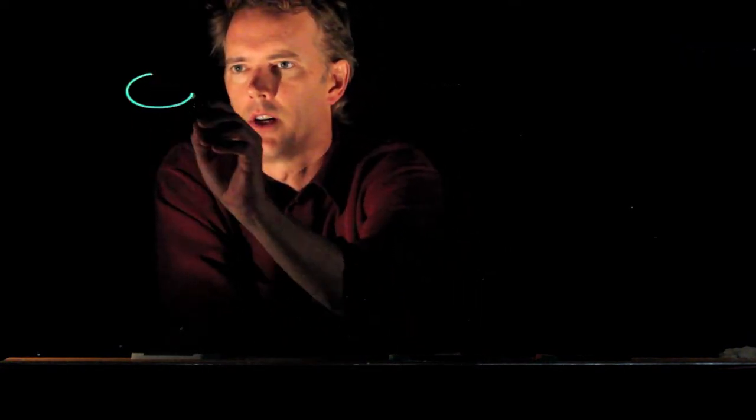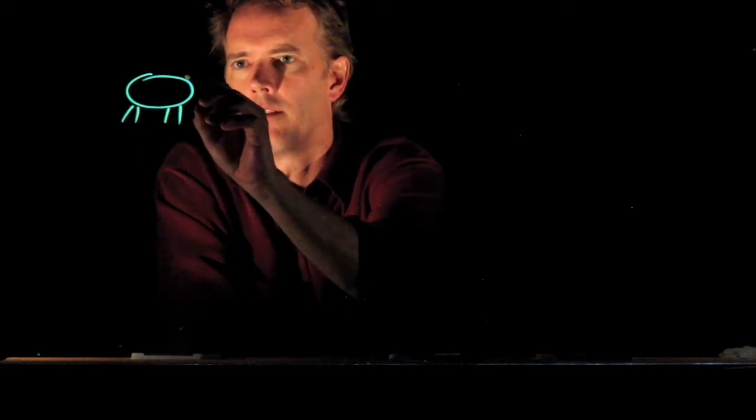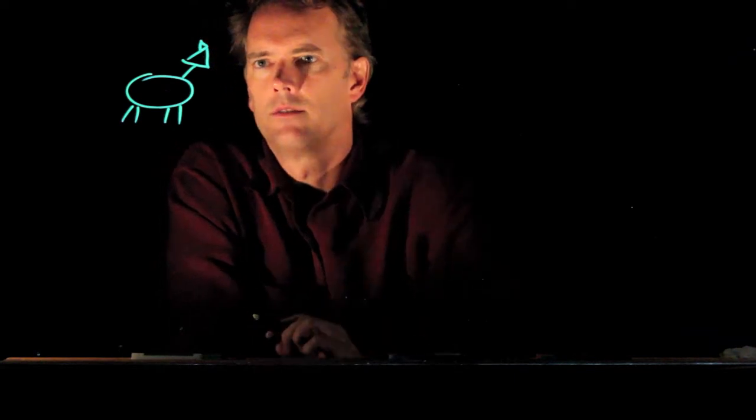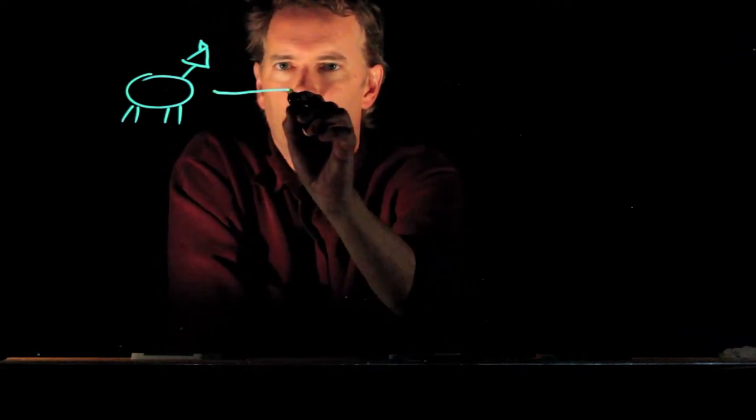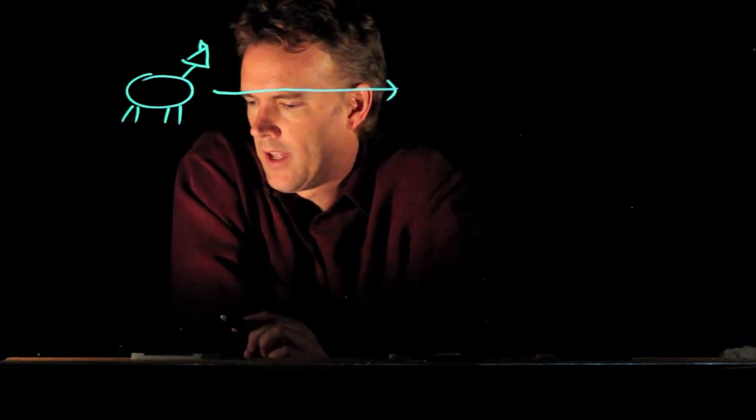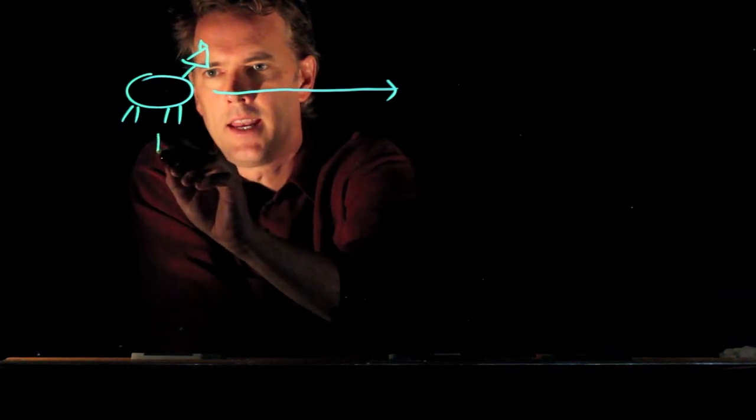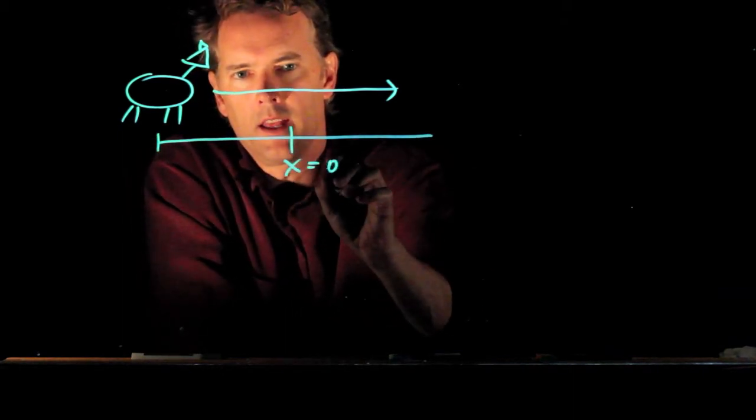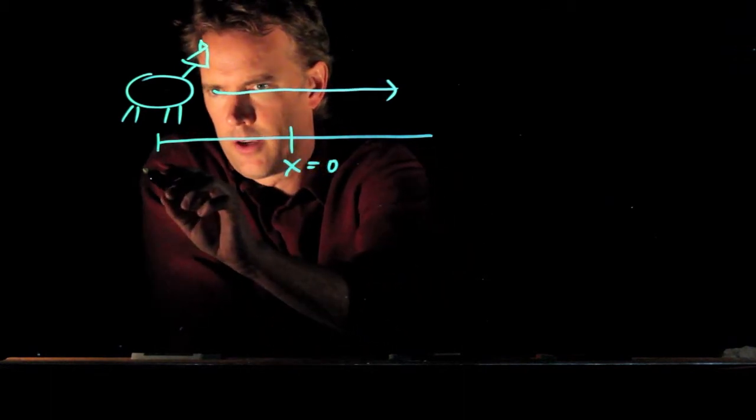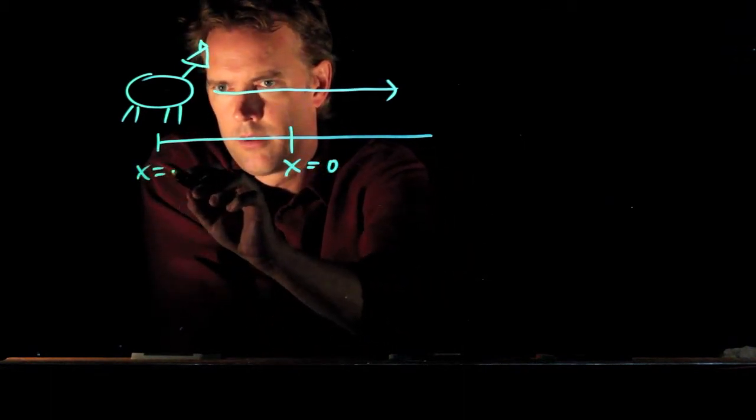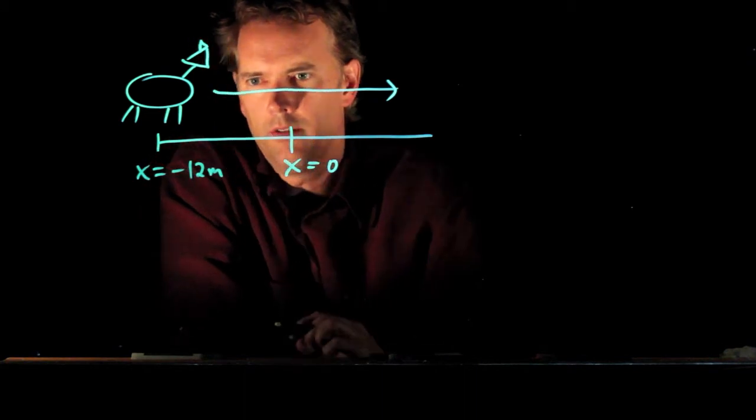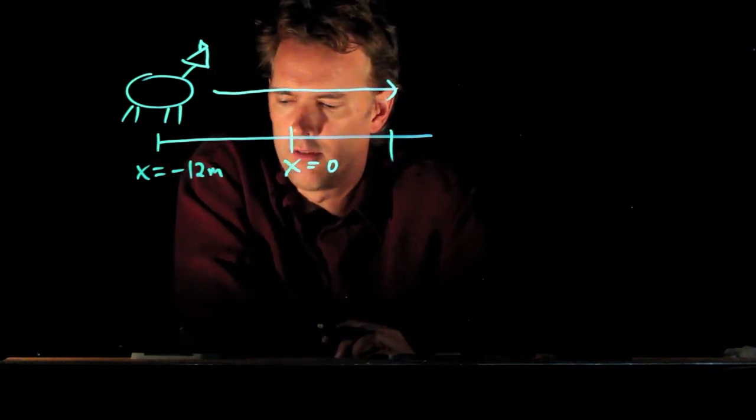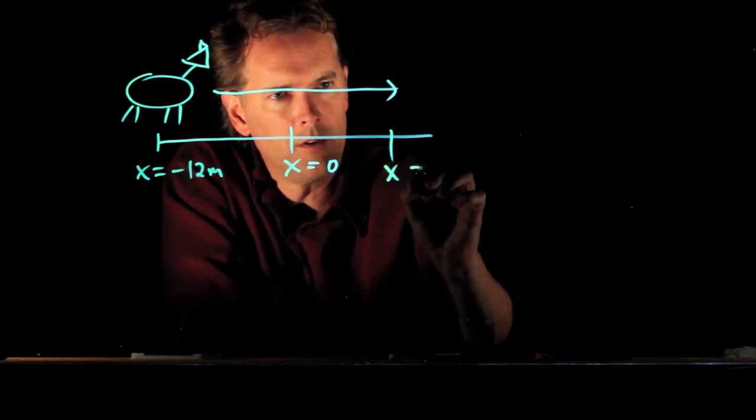In this problem we have a dog that is trotting along. There's my dog, don't laugh. The dog starts at a negative value for x - let's give that negative value negative 12 meters - and they trot along until they get to a positive value of 2 meters.